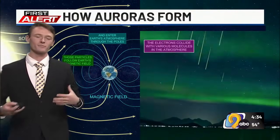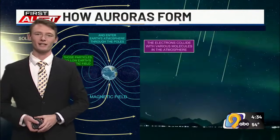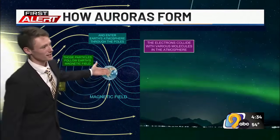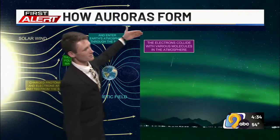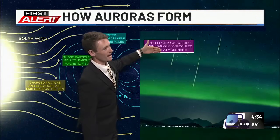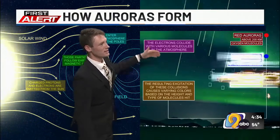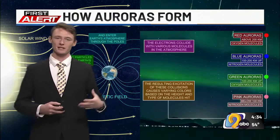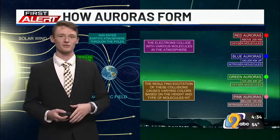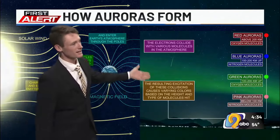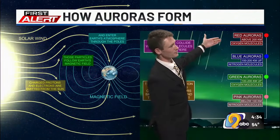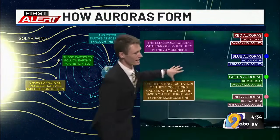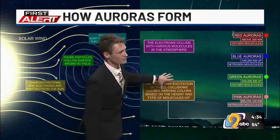As those charged particles enter our atmosphere, they interact with different molecules that exist at different heights. For example, as those charged particles come in and interact with oxygen, you get interactions between the protons and electrons and the oxygen, and that at the upper levels of the atmosphere creates a reddish color. Lower down in the atmosphere, it creates more of a